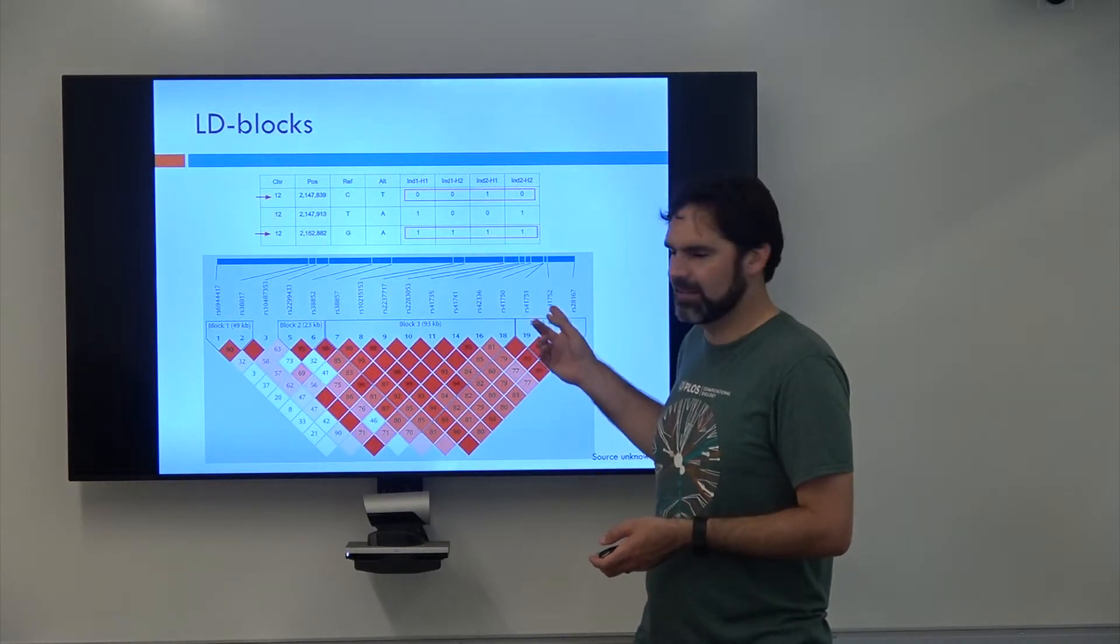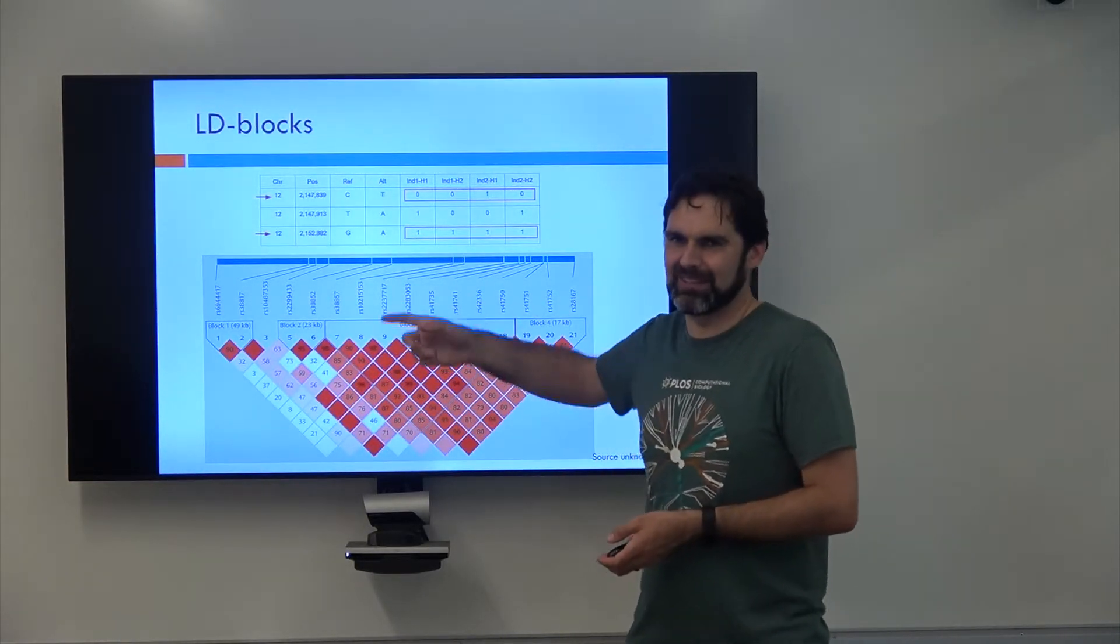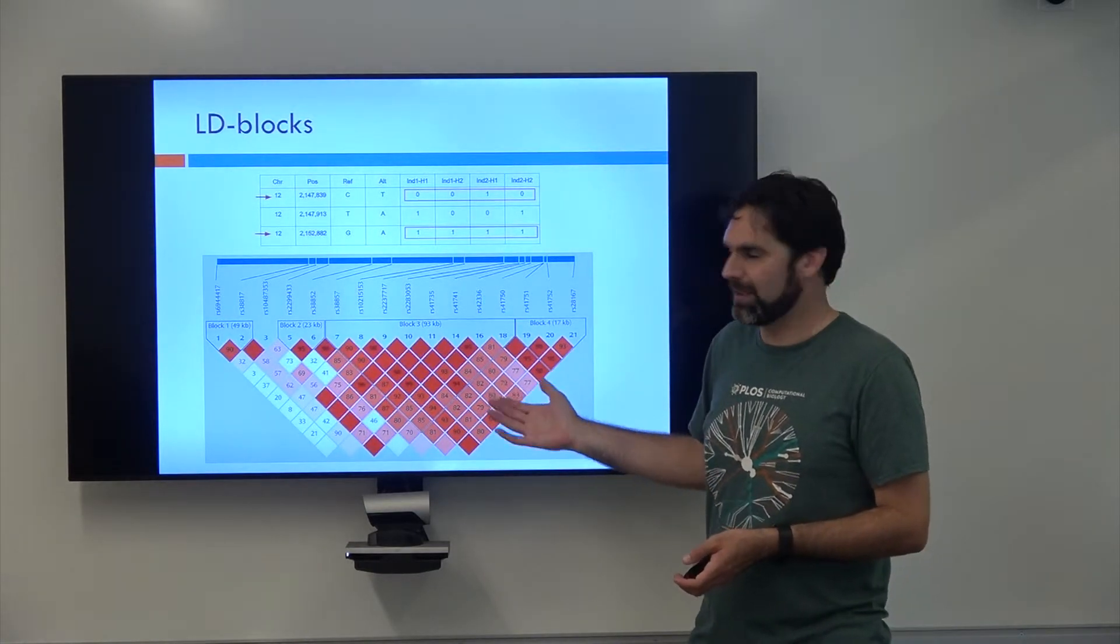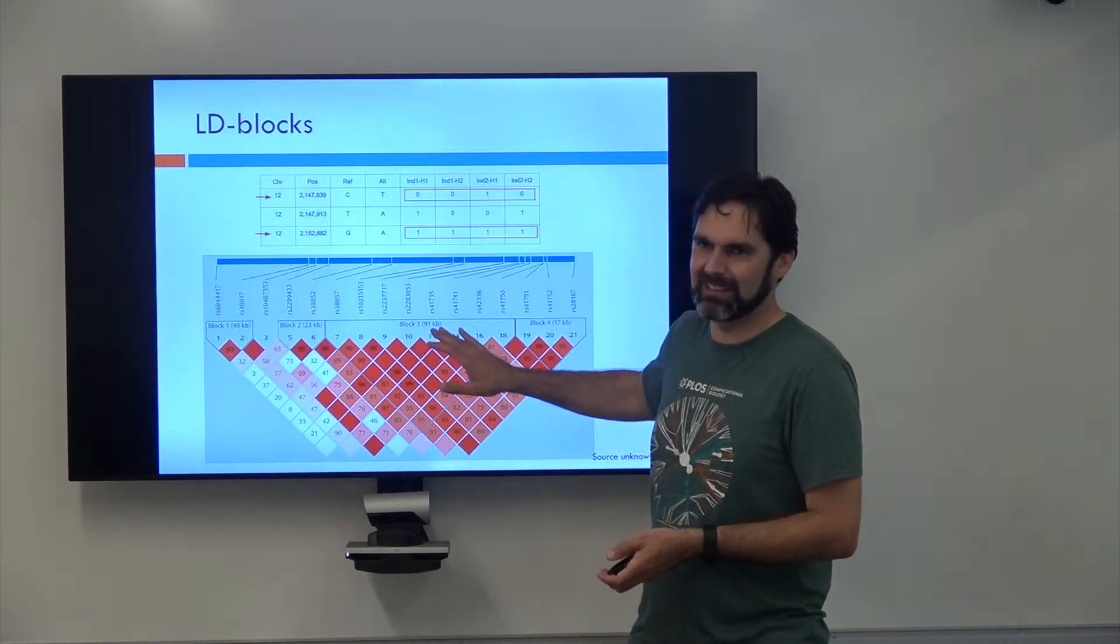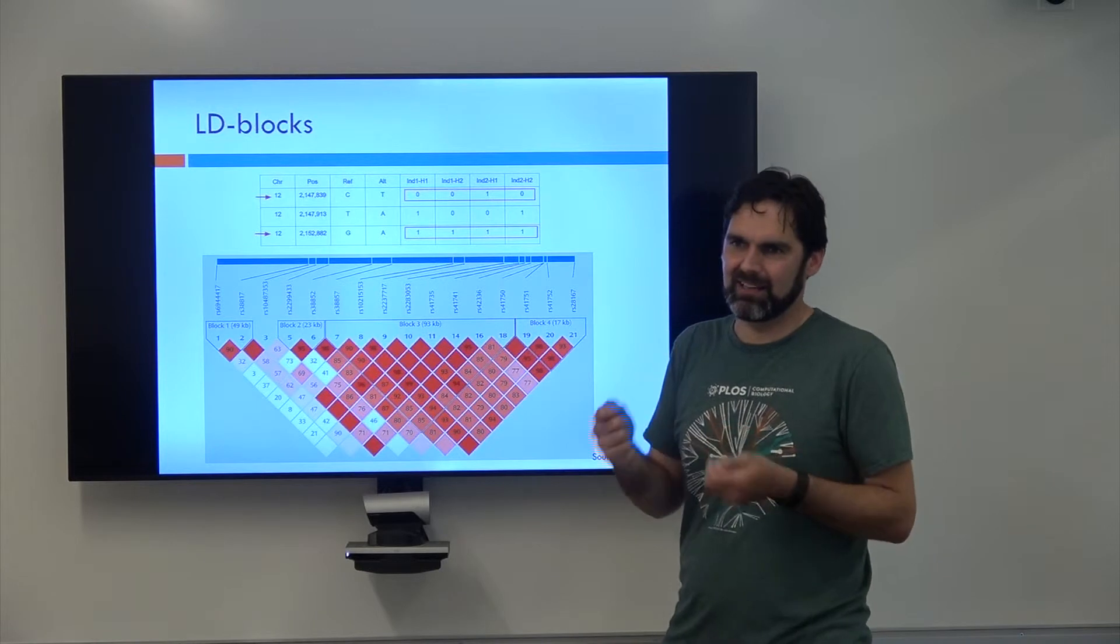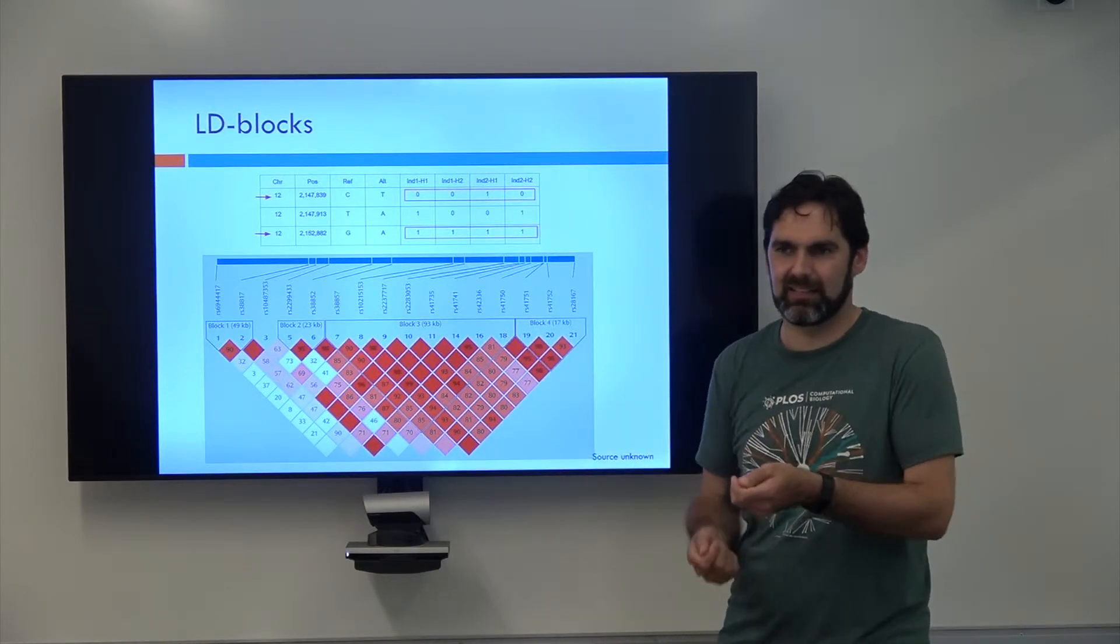There's probably a lot more information that would be contained down here. And I just didn't look up what this is actually representing. So... But in general, this is how you interpret it. Things that have large numbers and a red color tend to be inherited together and are usually highly linked. Yeah.